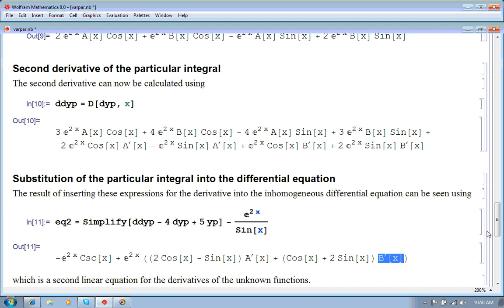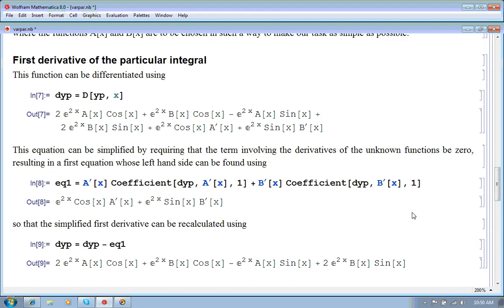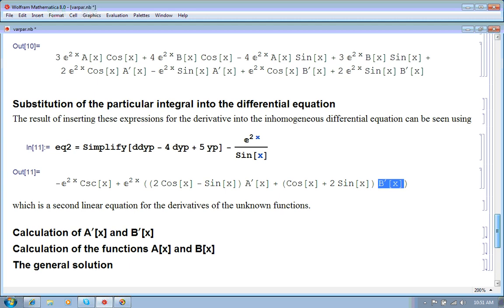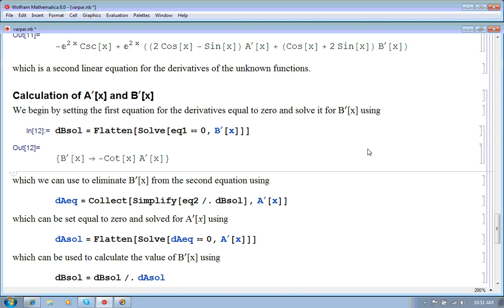So, what we've got now is two linear equations. This one and the first one, which was here, for the derivatives of the two unknown functions. So, we know how to solve those. So, what the easiest thing to do is to set the first equation equal to zero and solve it for B prime using that. So, that tells me that B prime of x is cot x minus cot x times A prime of x. And then we use that to eliminate B prime from the second equation.